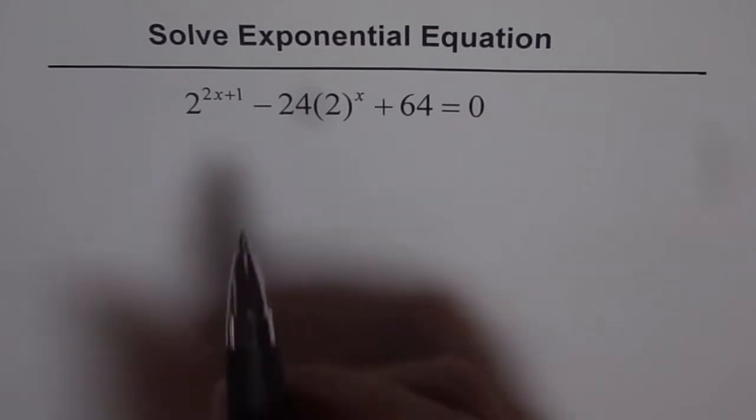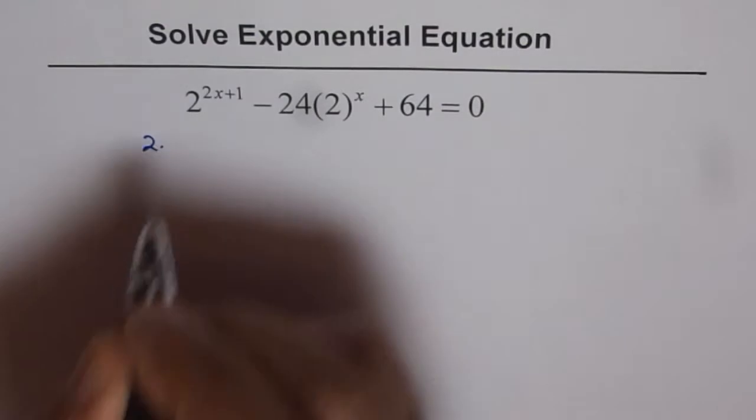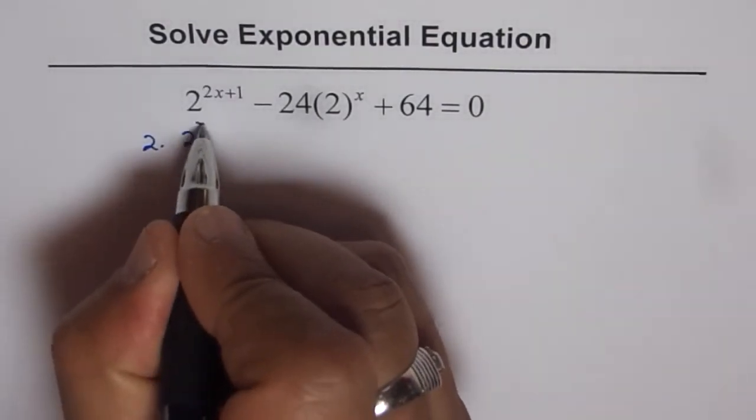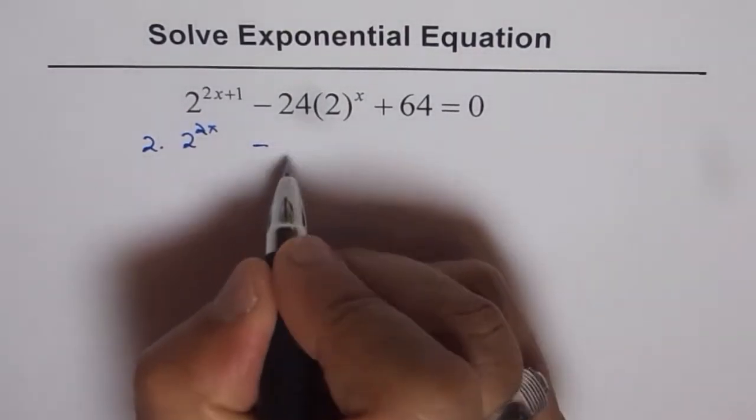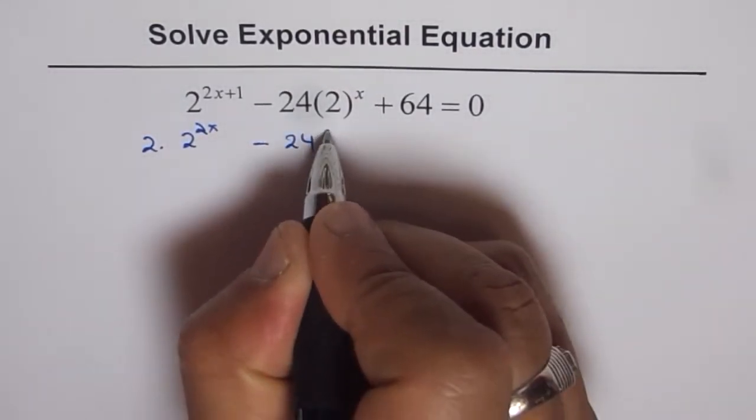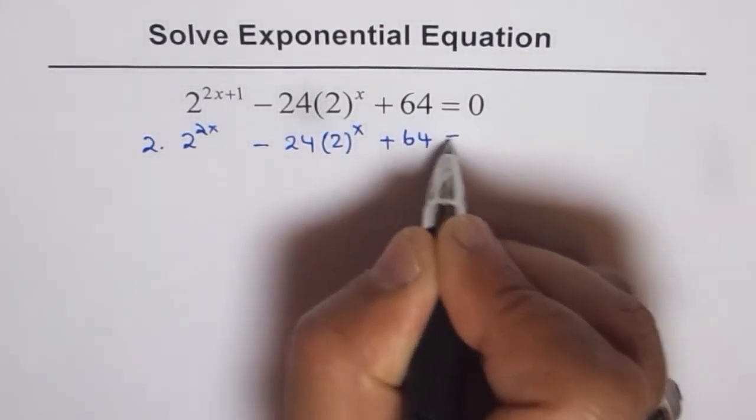Now, to solve such equation, we can rewrite the equation as 2 times 2 to the power of 2x. This is 2x plus 1, that means 2 times 2x minus 24, 2 to the power of x plus 64 equals to 0.